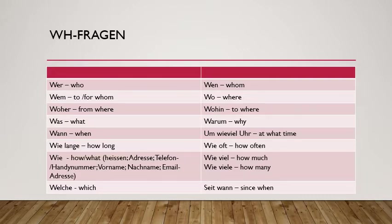'Welche' means which, 'wenn' means whom, 'wo' means where, 'wohin' means to where, 'warum' means why, 'um wie viel Uhr' means at what time — whenever a specific timing is given, for example 'the film begins at 7 o'clock'. 'Wie oft' is how often, 'wie viel' is how much, 'wie viele' is how many, and 'seit wann' means since when.